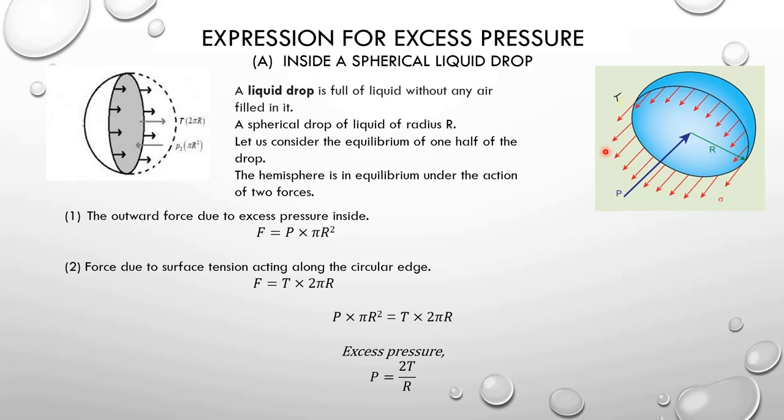What about air bubbles? An air bubble is a liquid drop in the air — it is completely filled with air. It has a thin outer liquid layer, and importantly there is an inner surface and an outer surface. So for soap bubbles, there are two surfaces.